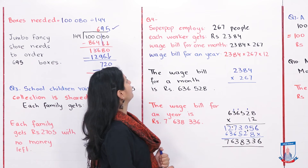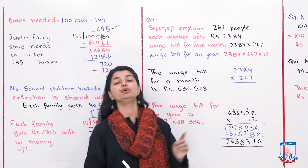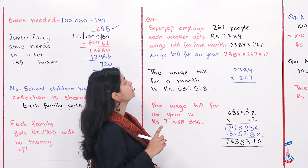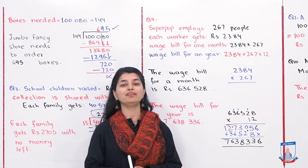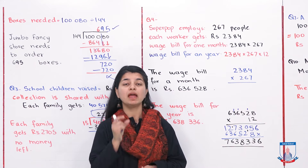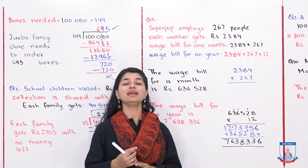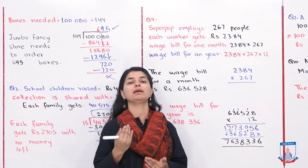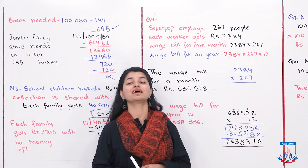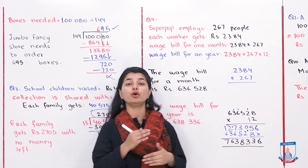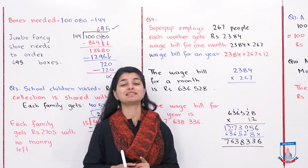Now let's look at question number 4. Superpop is a factory that employs 267 people. The monthly wage is Rs 2,384. The factory has a total of 267 people and every person's monthly salary is Rs 2,384. You have to find out how much money the factory pays in total to all employees. Since each person gets Rs 2,384, we will multiply 2,384 by 267 to get our answer.